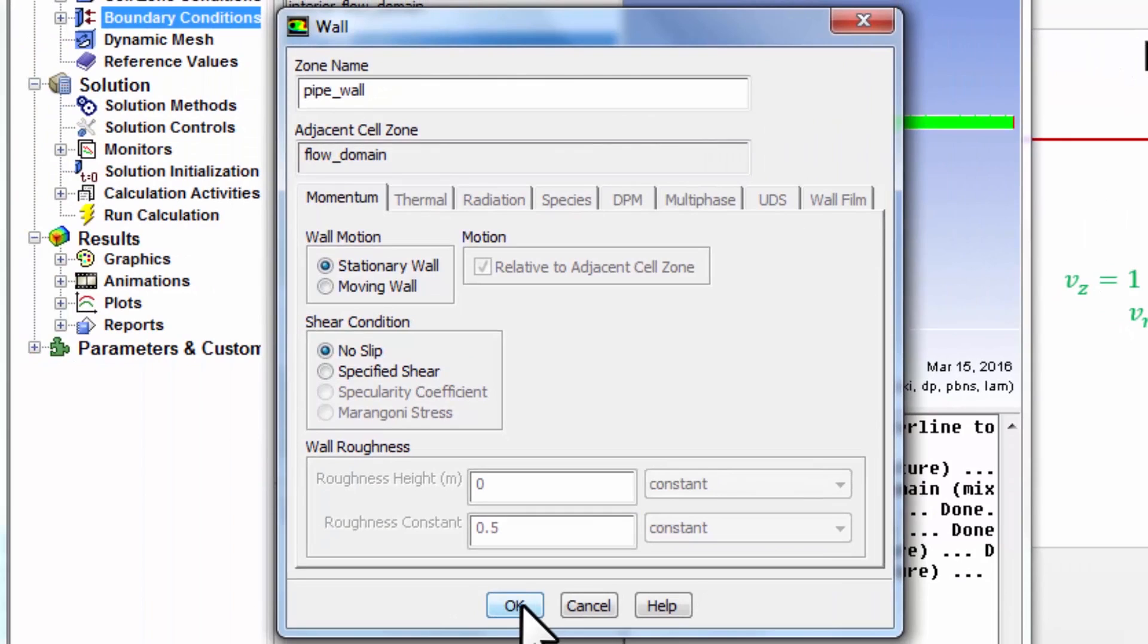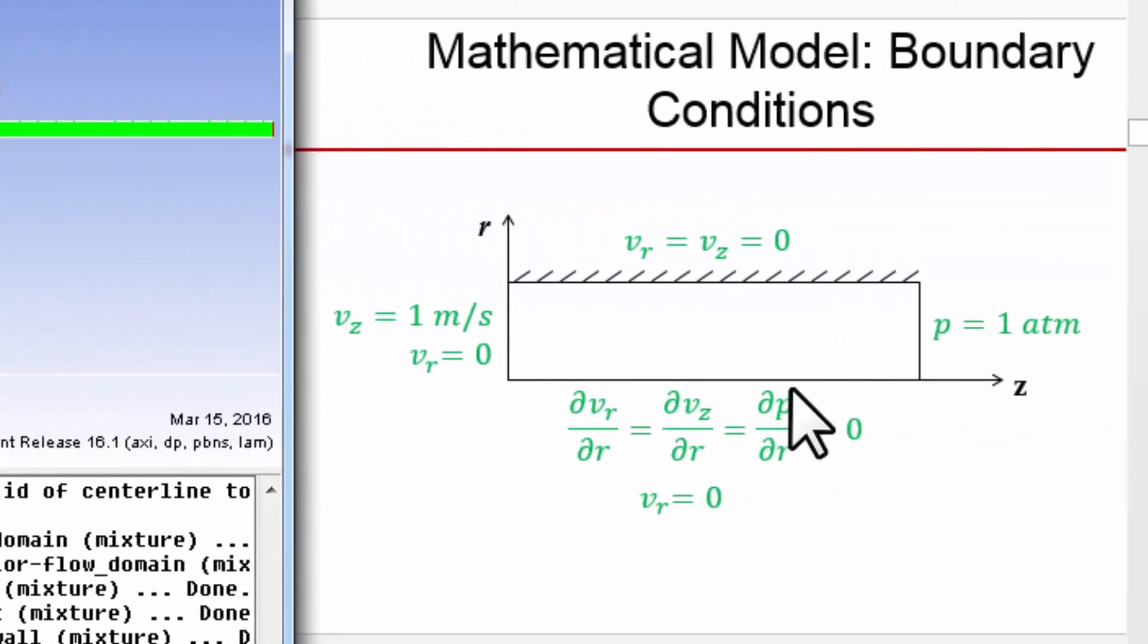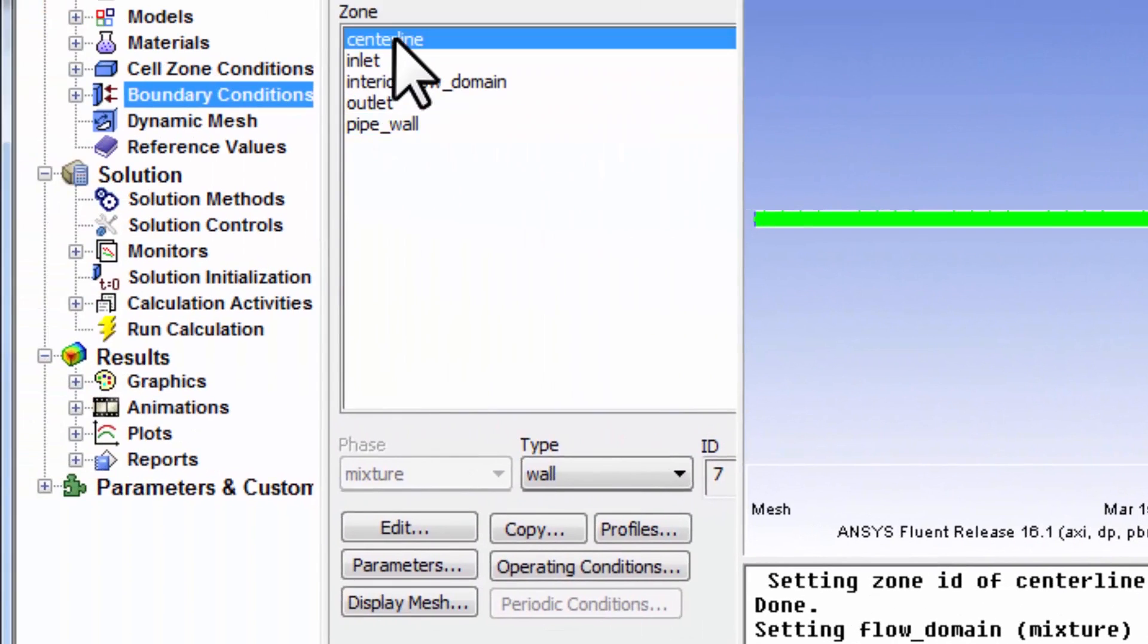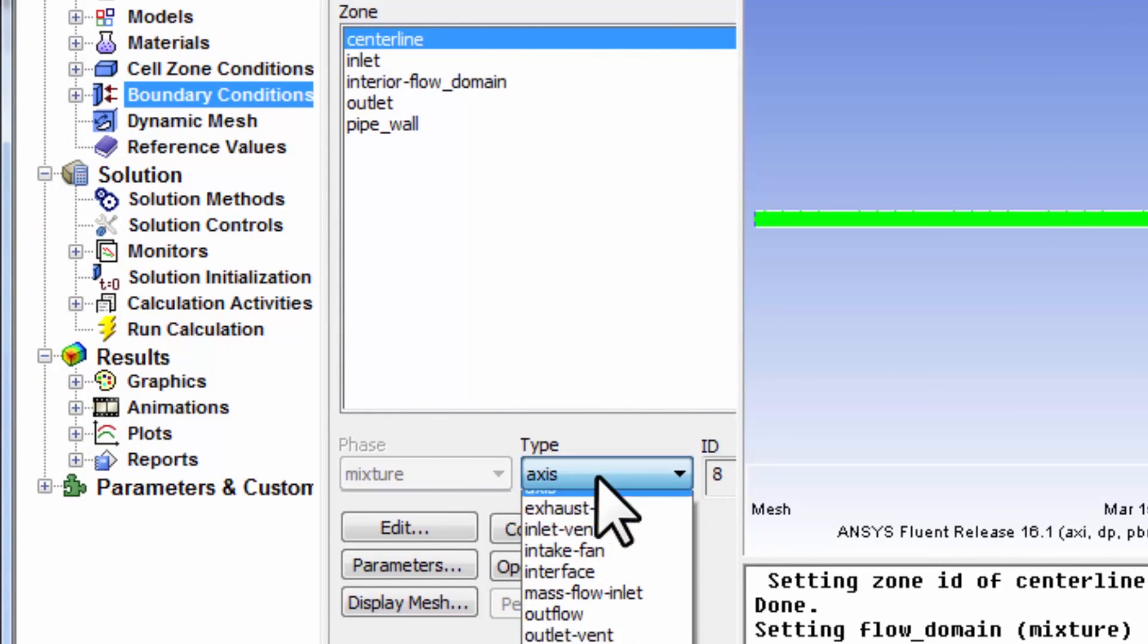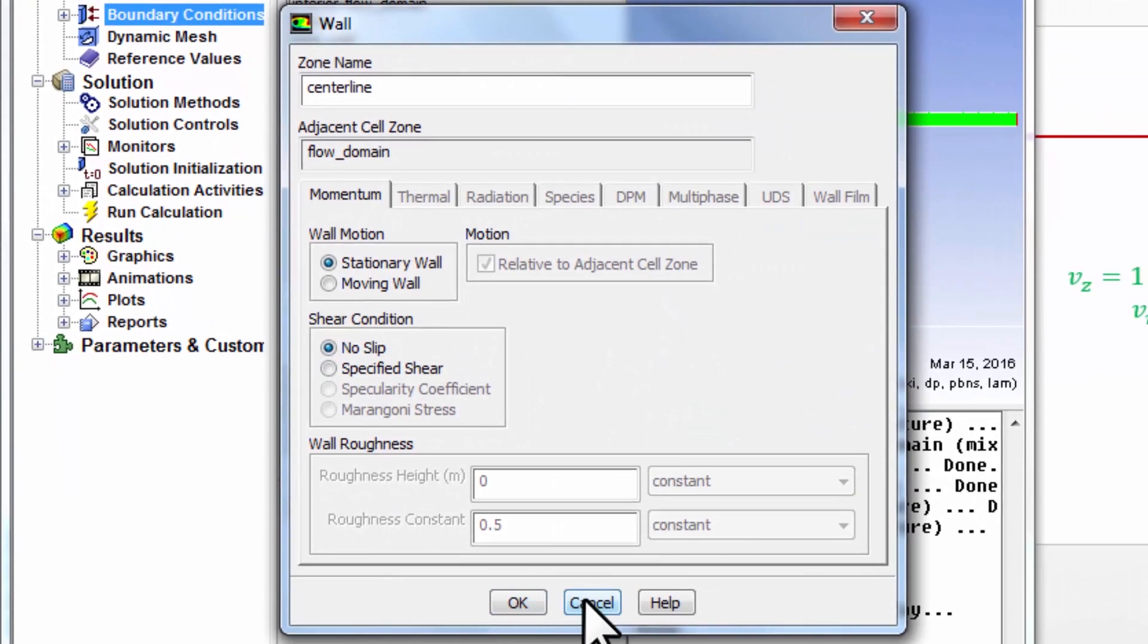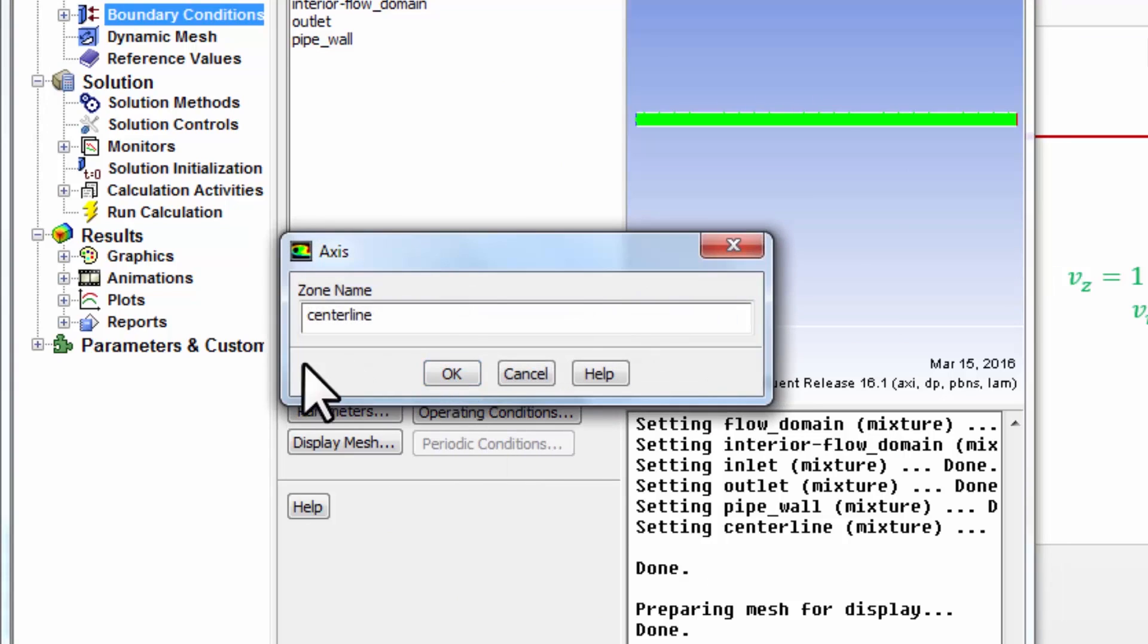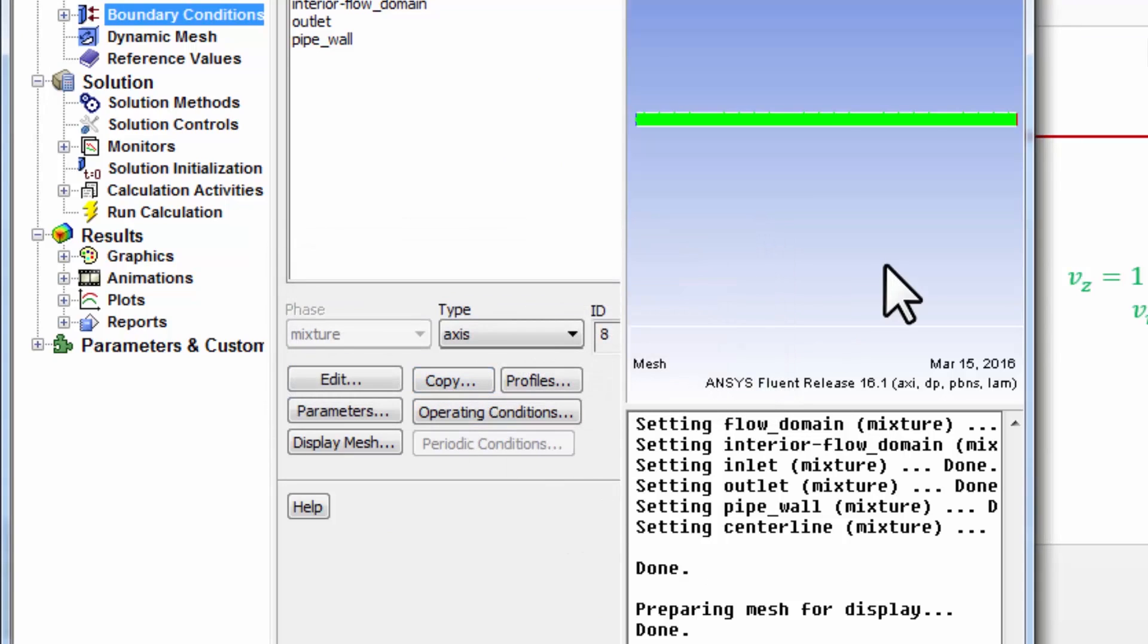At the centerline, this is important—you need to set the type to be axis. I was playing around with it so in my case it's already set to axis. In your case it's going to be set to wall, but what I want to set it as is axis. Just say okay.